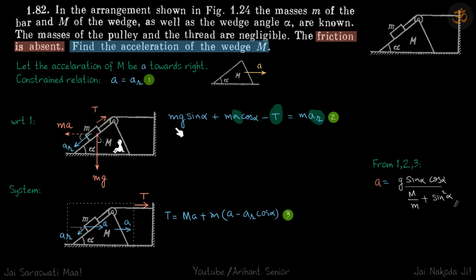Now let's write the force equation on small m. So downwards, the force will be mg sin alpha plus ma cos alpha minus t equals m into ar.